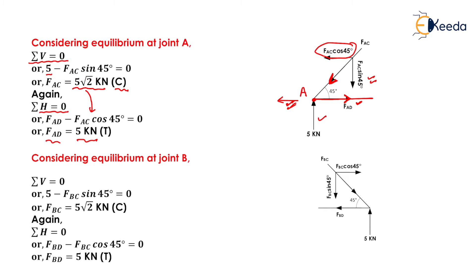Considering the equilibrium of joint B, we determine that the force in member BC equals 5√2 kN in compression, and the force in member BD equals 5 kN in tension.